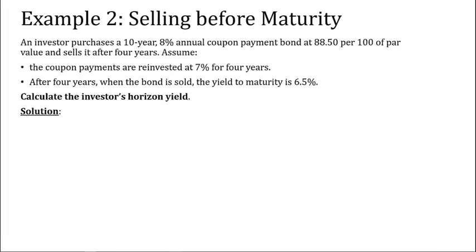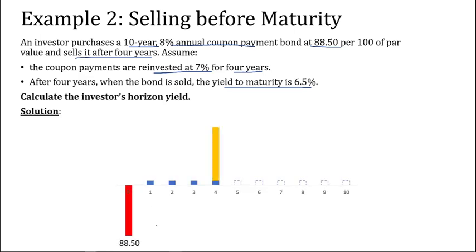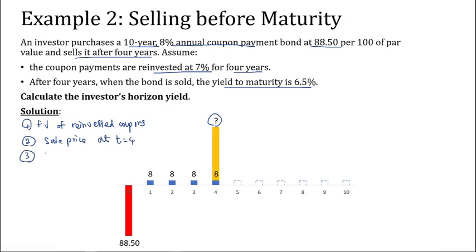For the last example, an investor purchases a 10-year 8% annual coupon payment bond at 88.50 per 100 par value and sells it after 4 years. Coupon payments are reinvested at 7% for 4 years. After 4 years when the bond is sold, the yield to maturity is 6.5%. Calculate the investor's horizon yield. The cash flows look like this: the investor pays 88.50 and receives $8 coupons for 4 years. At the end of year 4, the investor sells the bond at an amount — unknown for now, but we'll calculate it. We'll follow the 3-step approach: step 1, calculate the future value of the reinvested coupons; step 2, calculate the sell price at end of year 4; step 3, calculate the horizon yield.